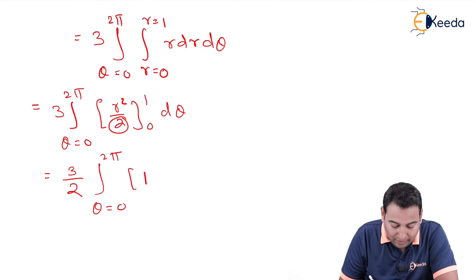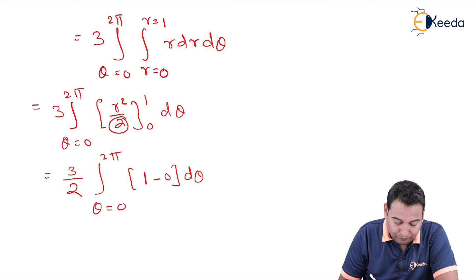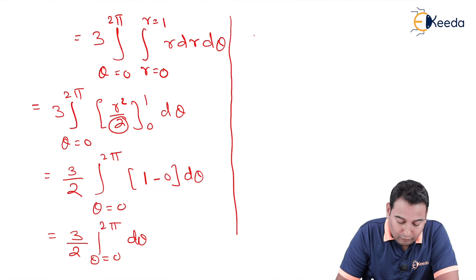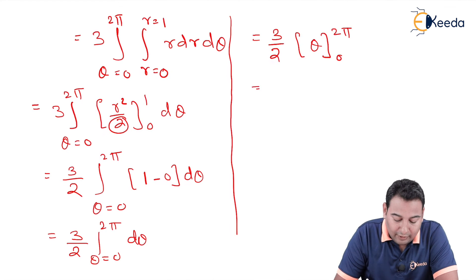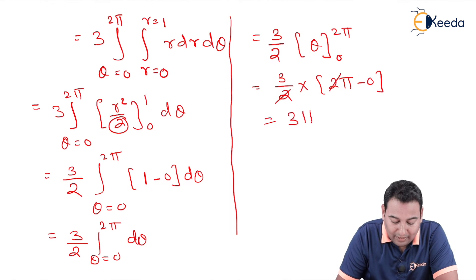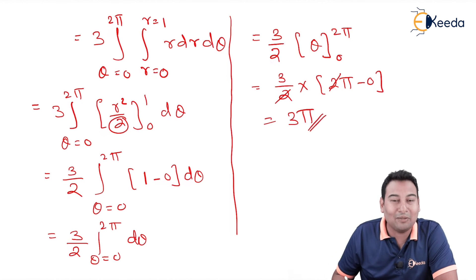Upper limit 1, lower limit 0, d theta. In short, we are left with 3 by 2 d theta. And the integration is theta. Limits are from 0 to 2 pi. Let us substitute upper minus lower: 2 pi minus 0. 2, 2 got cancelled, 3 pi. This is the required result. Done with the problem. Hope you understood. Thank you.